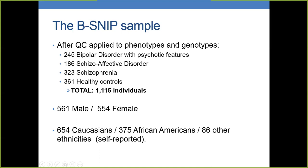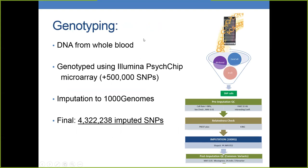The male-female ratio is almost equal. This is an admixed panel: we have 654 Caucasians, 375 African Americans, and 86 other ethnicities including Asians, Native Americans, and Latino populations. The genotyping was done from DNA from whole blood using the Illumina PsychChip, a microarray specific for mental disorders containing half a million SNPs, with about 60,000 target SNPs for mental disorders.